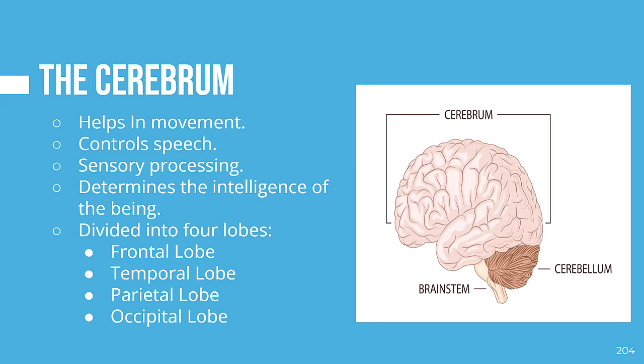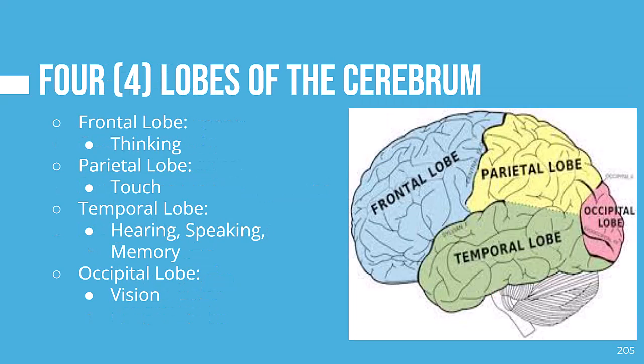The cerebrum is broken up into four lobes, each with a different function. The four lobes are the frontal lobe, which involves thinking; the parietal lobe, which involves touch; the temporal lobe, which involves hearing, speaking, and memory; and the occipital lobe, where the focus is vision.